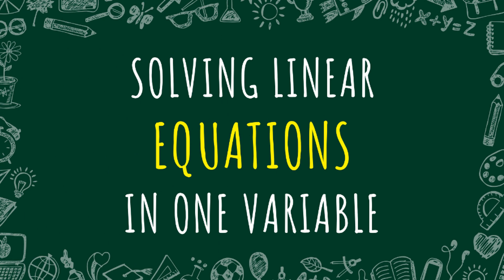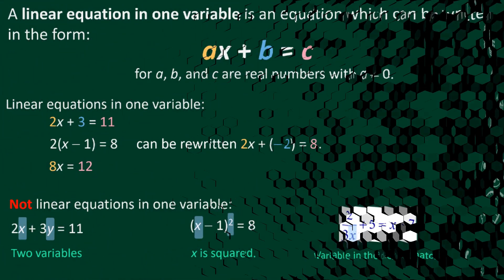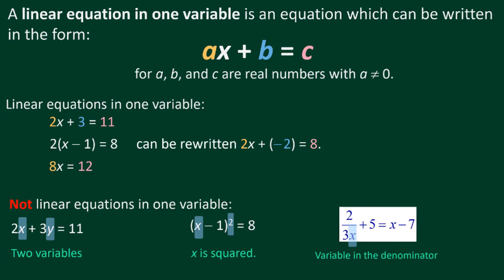Now let's move to solving linear equations in one variable. Before we solve, remember: a linear equation in one variable is an equation which can be written in the form AX plus B equals C, where A, B, and C are real numbers — meaning whole numbers or real numbers. Importantly, the value of A must not be equal to 0.